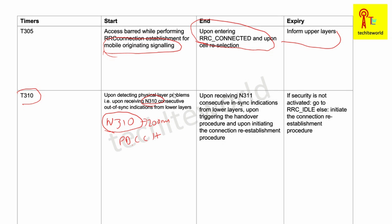T310 ends when the UE detects N311 consecutive successful intervals. N311 is the opposite of N310 — it indicates the number of consecutive 100ms intervals during which the UE is able to successfully decode PDCCH information in the downlink. When the physical layer problem is resolved, the UE stops T310.